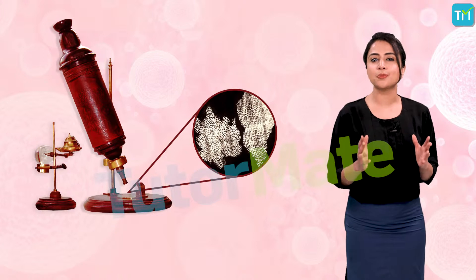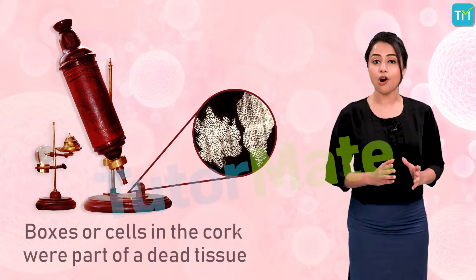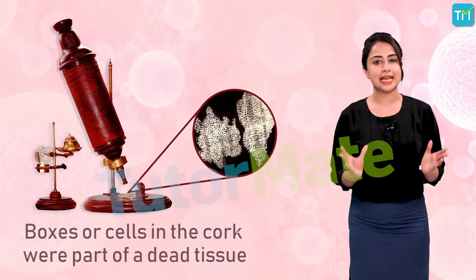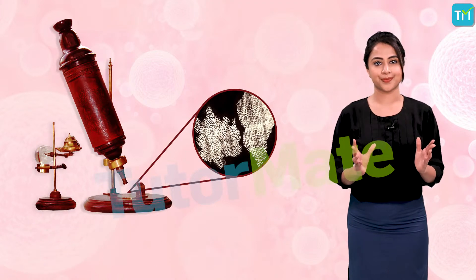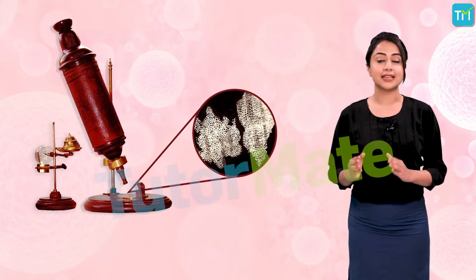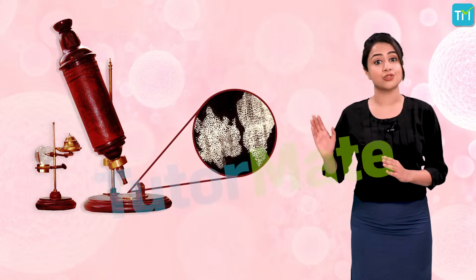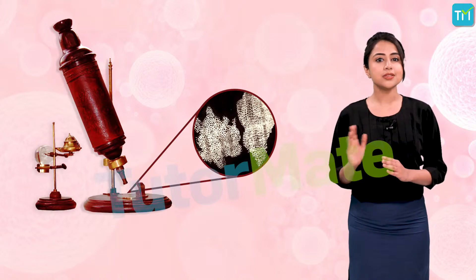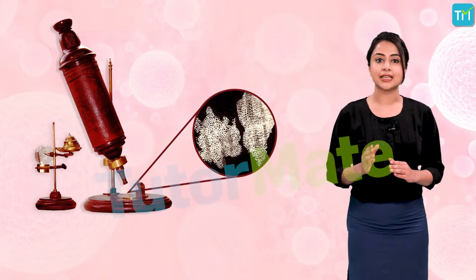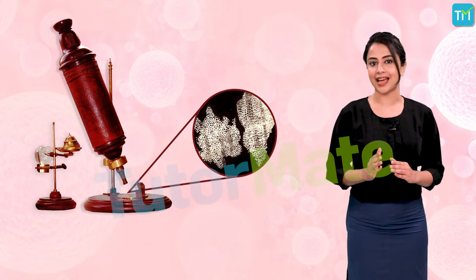What Hooke observed as boxes or cells in the cork were part of a dead tissue. The magnifying device that Hooke used back in the 17th century wasn't advanced enough to study cells of living organisms.